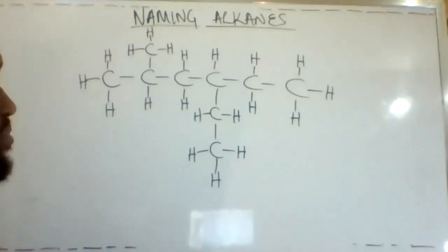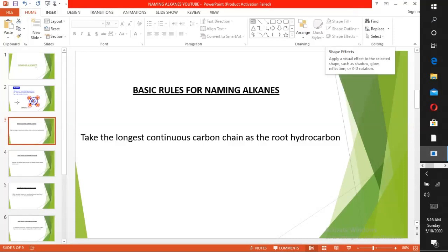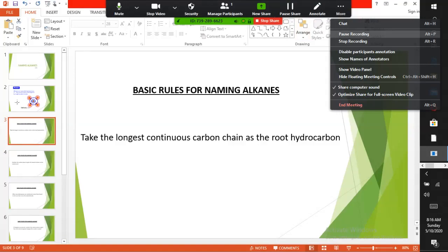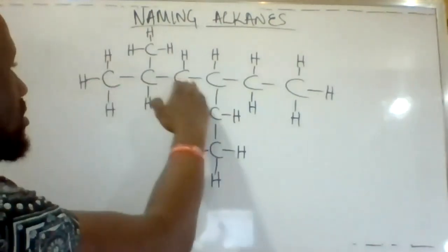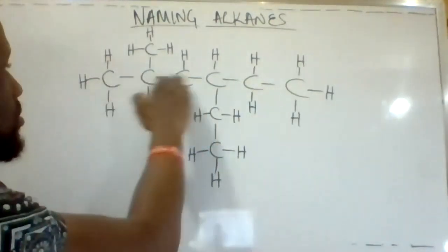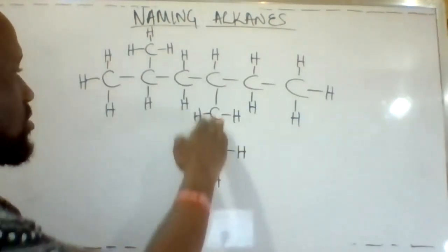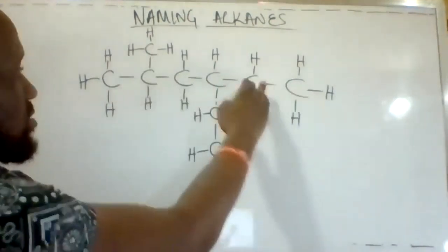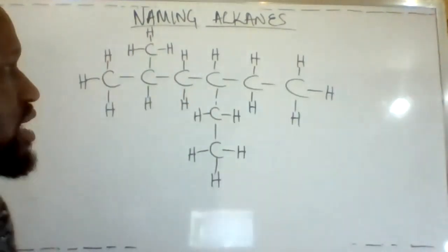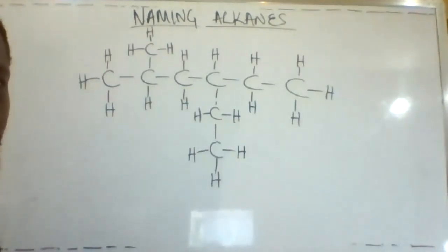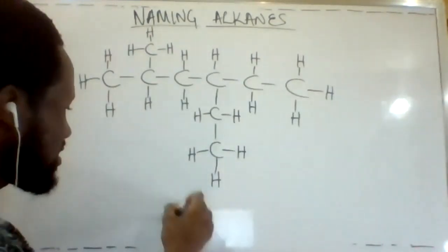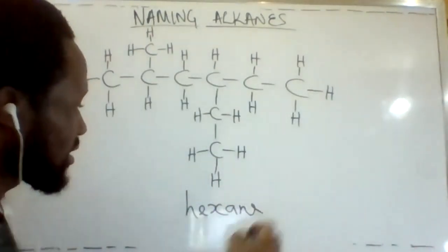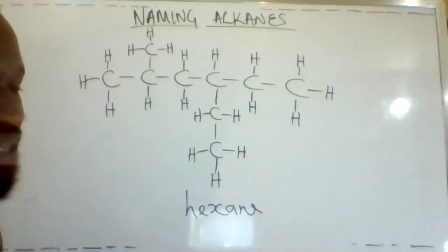Now let's take our second example. The first rule is to take the longest continuous chain as the root hydrocarbon. Let's identify the longest continuous chain: one, two, three, four, five, six. No matter which path we count from, we have six carbon atoms. Therefore, the parent substance is hexane.